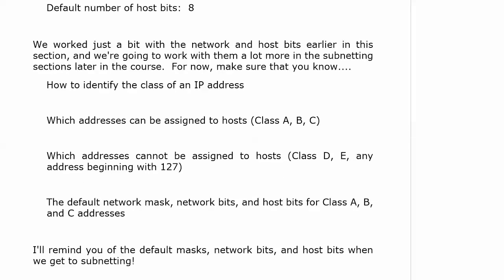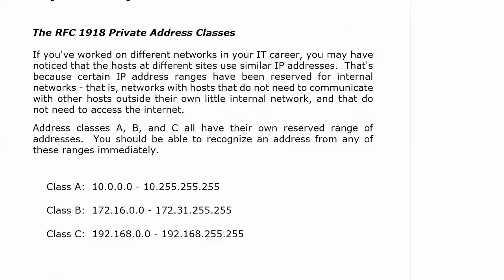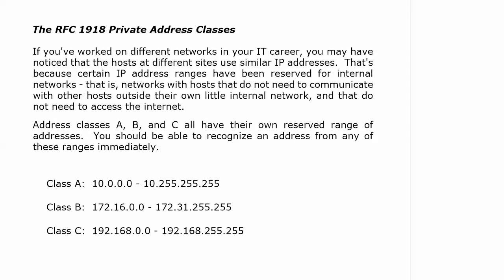Know the class, which addresses can be assigned to hosts, which ones can't, and the mask and bit information we just went over. When we hit subnetting, I'll be reminding you of those values. Here's that RFC number I think you should know by heart: 1918. Really easy to remember. RFC 1918 defines what we call private address classes — something you run into if you've worked on different networks, where hosts at different sites use similar IP addresses because certain ranges are reserved for internal networks that don't need to access the Internet.